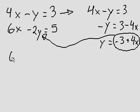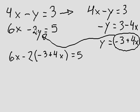So we have 6x minus 2 bracket negative 3 plus 4x, which is actually equivalent to 4x minus 3. That's equal to 5. So this is just that equation with the y replaced with what we found.